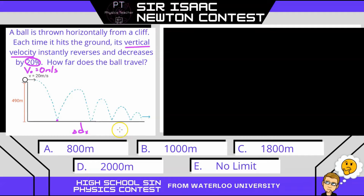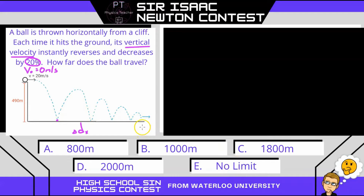Now, a lot of the times, students will say, well, if it keeps reducing by 20%, it'll never actually reach 0, and therefore its range has no limit. But this is the incorrect answer. As we'll see in this question, an infinite number of bounces can have a finite limit for how far it goes.